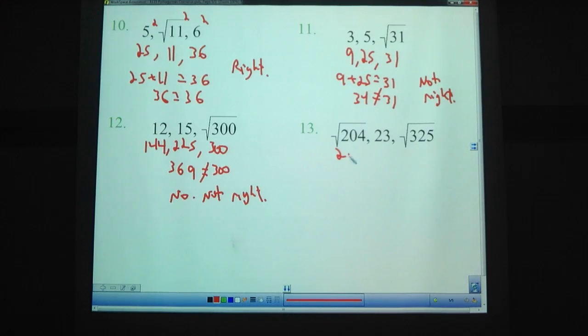Problem 13. Square root of 204 squared is 204. 23 squared, 529. Square root of 325 squared is 325. This is the trickiest part, I think, on these ones, is remembering that with the square root you just cancel out the square root. If it's not square root, you actually have to square it. We need to add those outside two together. 204 plus 325 equals 529. And it gives us 529 equals 529. So this one is a right triangle.